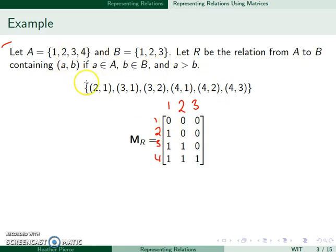We need A to be bigger than B, so these are our points. We don't have anything that starts with a 1. I have 2, 1, no 2, 2, no 2, 3. Then 3, 1 and 3, 2, but not 3, 3. And then 4, 1, 4, 2, and 4, 3.